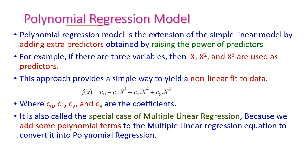Let us see what is the polynomial regression model. This model is an extension of the simple linear model by adding extra predictors, obtained by raising the power of predictors. Here, y is the dependent variable and x is the independent variable, also called the predictor. We are going to raise the powers of predictors to convert the simple linear model into a polynomial regression model.